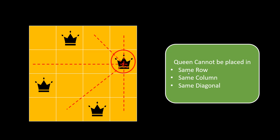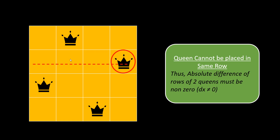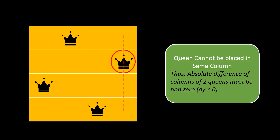How do we find out if the other queens are in the same row, same column, or same diagonal? For the same row condition: if any other queen falls in the same row, the absolute difference between the rows of both queens would be zero — that is, dx equals zero. That should not be the case. Similarly for column, the absolute difference of the columns of two queens must not be zero; it should be non-zero. If this queen was falling into the same column, the absolute difference would become zero, meaning one queen can attack the other. So we take dy not equal to zero as a condition for the same column.